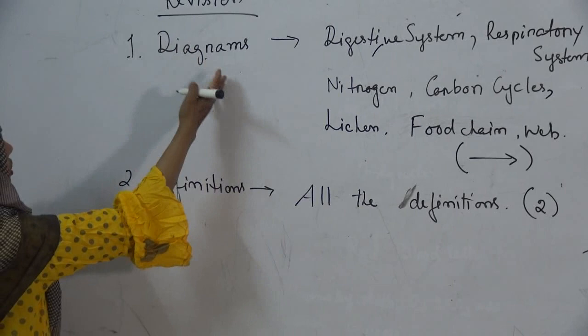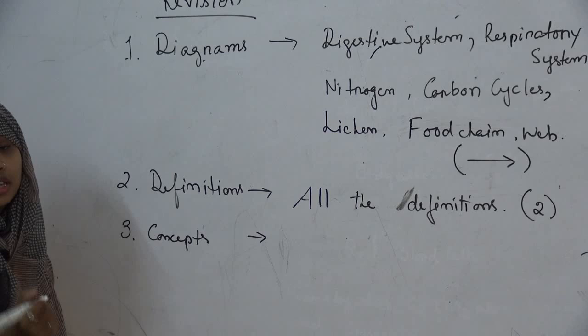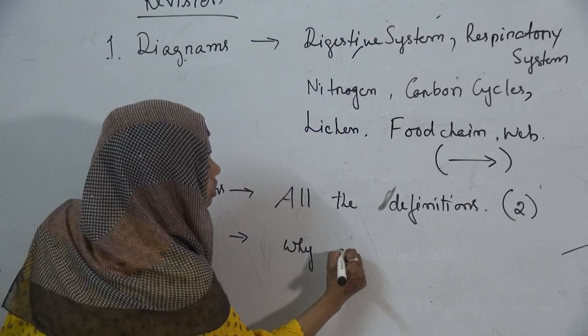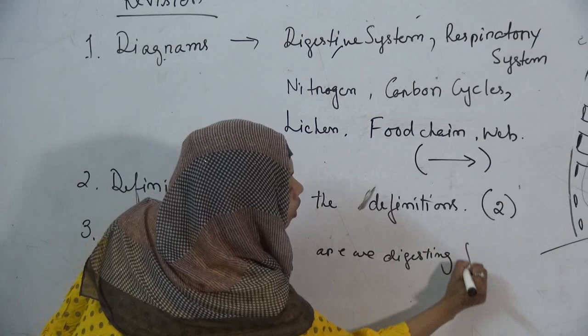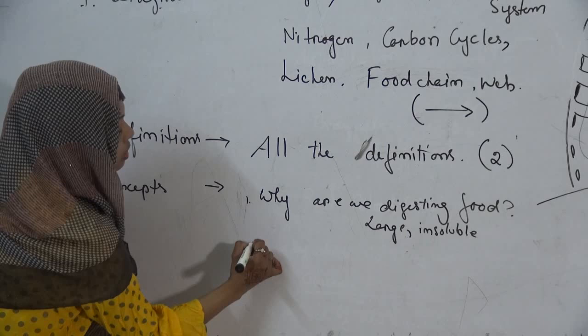For concepts: what is the whole point of digestion — why are we digesting food? Because food is large and insoluble, so you need to convert it into something smaller and soluble which can be taken up by your bloodstream.